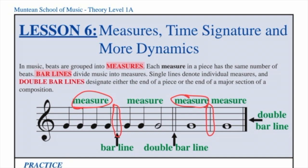Double bar lines designate either the end of a piece or the end of a major section. The end of the piece has one thick bar line and a thinner bar line. The end of a major section is designated with the simple thin double bar line.